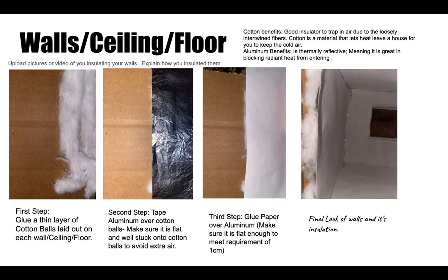After I glued them on, I taped some aluminum over the cotton balls, and after that I put the poster board on top of that. When I was doing this, I made sure that it met the requirement of one centimeter because I didn't want it to go over that. As you can see from the outside of the door, you can see the inside of the insulation — the cotton, the aluminum, and then the poster board.